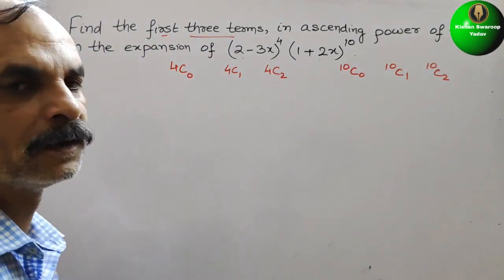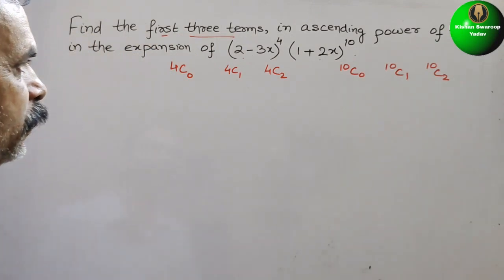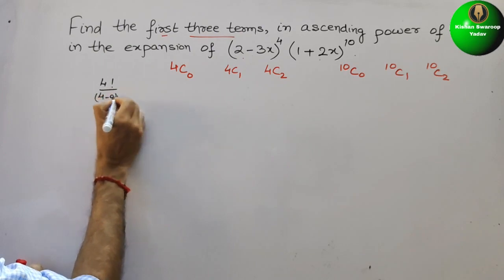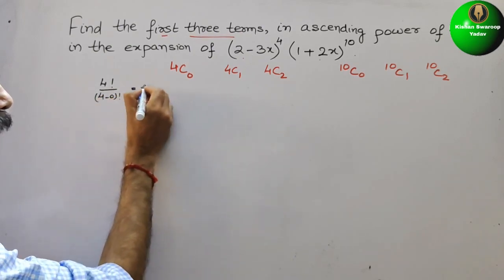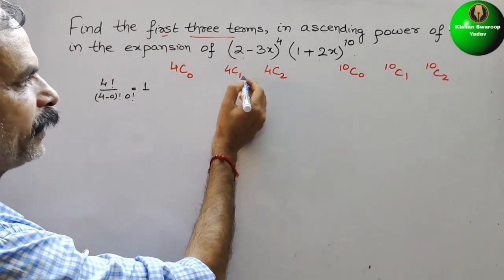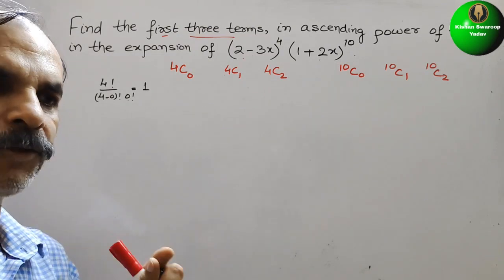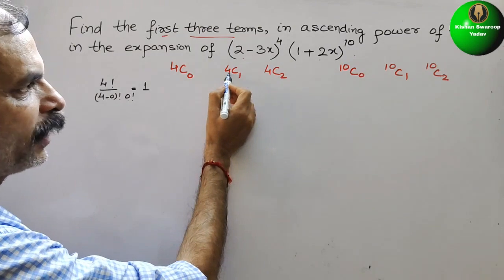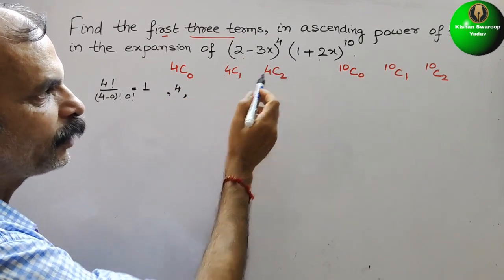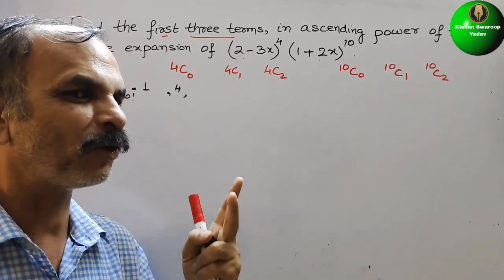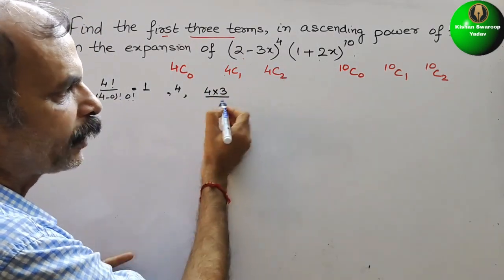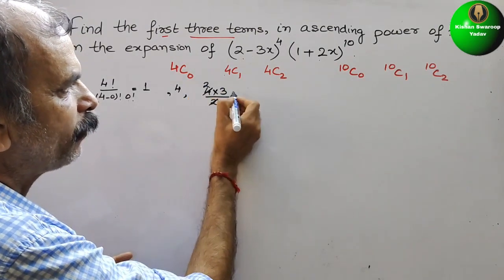Solving the coefficients: 4C0 is 4 factorial divided by (4 minus 0) factorial and 0 factorial, which equals 1, since 0 factorial is 1. For 4C1, using the shortcut, we write only one number from 4 factorial, which gives us 4. For 4C2, we write two numbers: 4 into 3 divided by 2 factorial, that is 2 into 1, which reduces to 6.